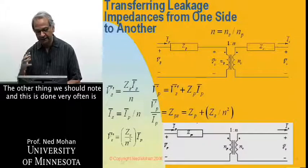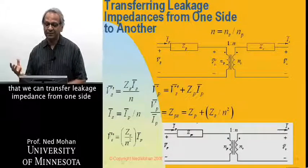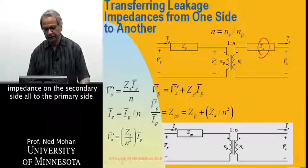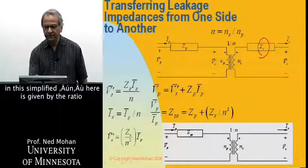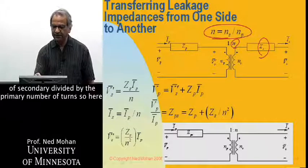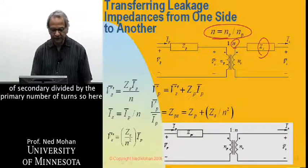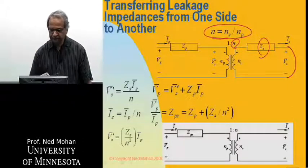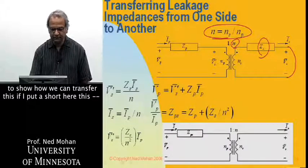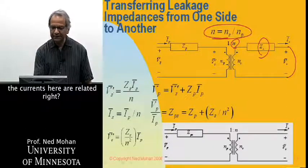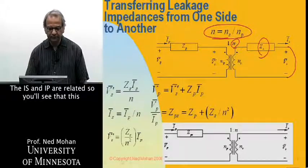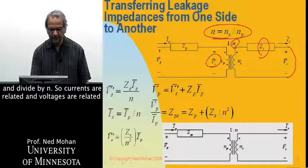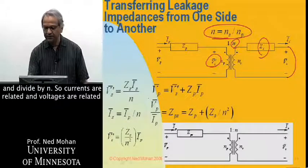The other thing we should note, and this is done very often, is that we can transfer leakage impedance from one side to the other. So here I'm showing how you can take this leakage impedance on the secondary side all to the primary side in this simplified representation, where this n here is given by the ratio of secondary divided by the primary number of turns. So here, as you can see, if I were to put a short here, the currents here are related, right? IS and IP are related. So you'll see that this VS prime here is equal to the product of this and this and divide by N. So currents are related and voltages are related.